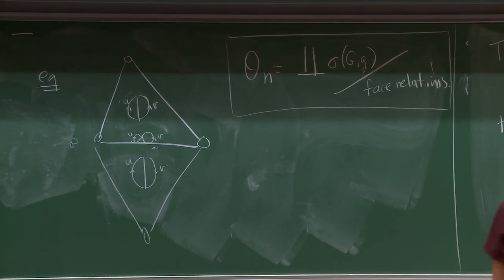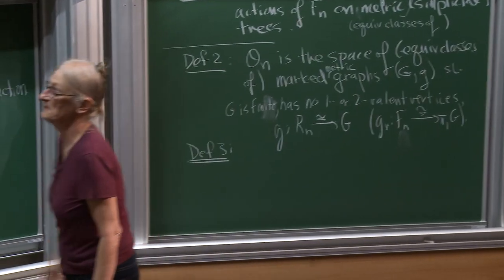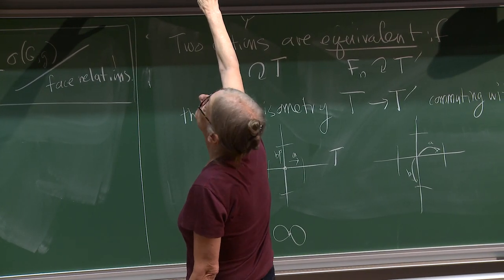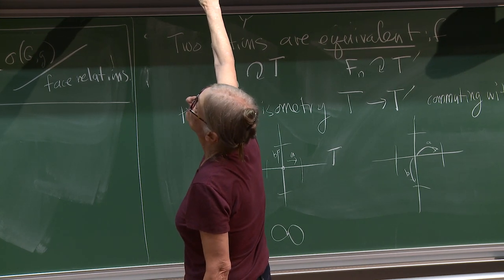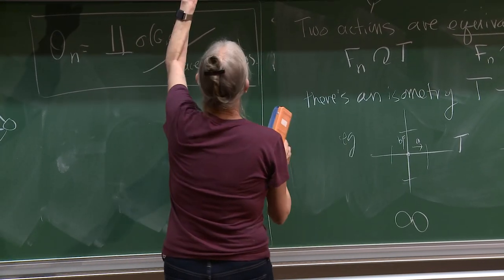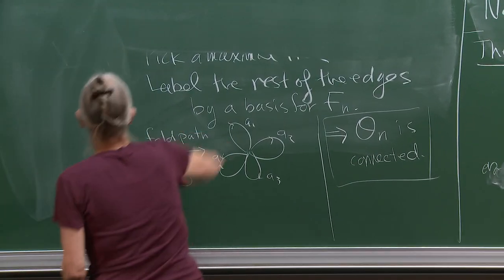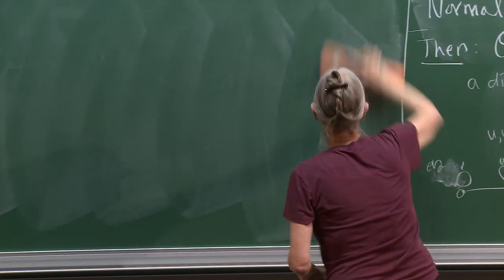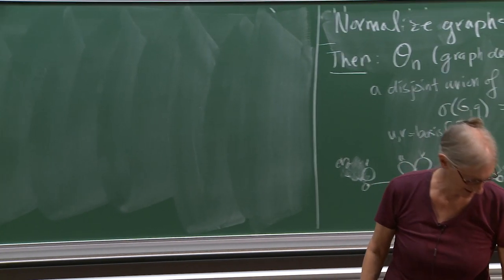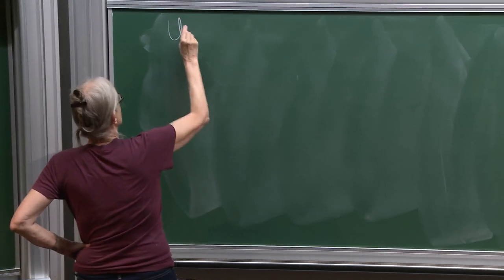Third definition — same space, still defining the same space three different ways. It's going to be in terms of this three-manifold and spheres in the three-manifold. You should like this definition because everybody likes the curve complex; the definition looks a lot like a curve complex definition.